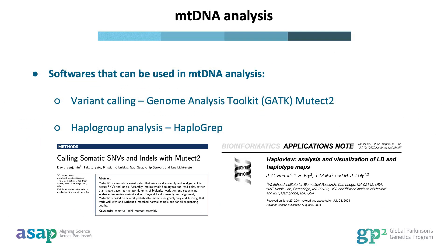Two common approaches utilized for mitochondrial DNA analysis are variant calling, often done with the Genome Analysis Toolkit known as GATK, the Mutect2 tool, and haplogroup analysis.